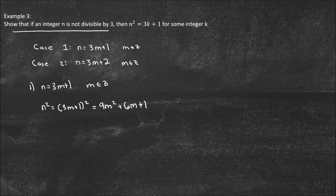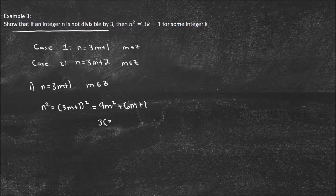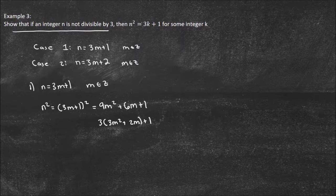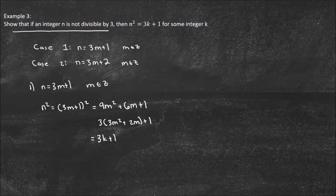Now I'm trying to show that that equals 3k plus 1. Well, that's not bad, because I can take out a 3 right here, and I'll be left with 3 times 3m squared plus 2m plus 1. I can write this 3m squared plus 2m. Well, that could be my k, because that's some integer. So this equals 3k plus 1, where k is an element of Z. That proved it for case 1.